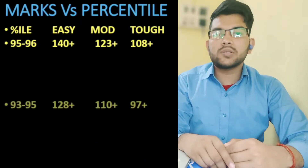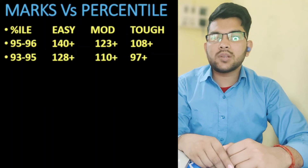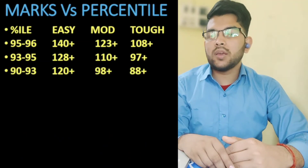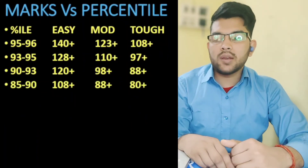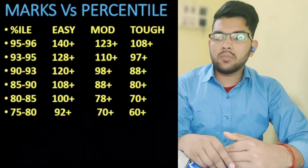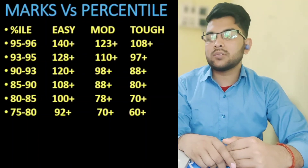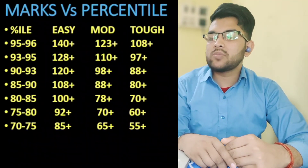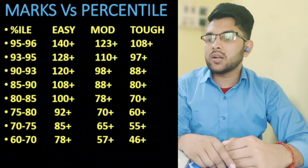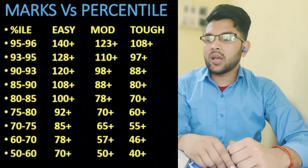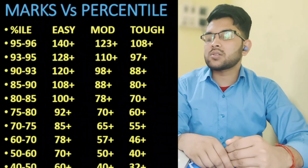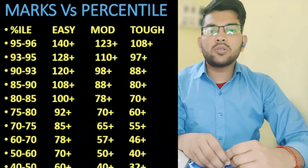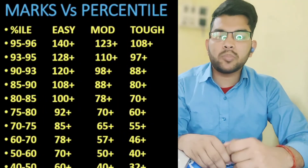For 75 percentile or above, you need 92 marks for easy, 70 for moderate, and 60 for tough. For 70 percentile or above: 85, 65, and 55 marks. For 60 percentile or above: 78, 57, and 46 marks. For 50 percentile or above: 70, 50, and 40 marks. For 40 percentile or above — the least percentile any student should target — 60+, 40+, and 32+ marks will be required. This is all the updated marks versus percentile data after the announcement of only two attempts this year.